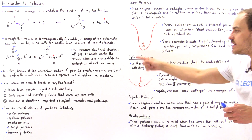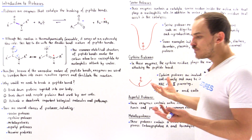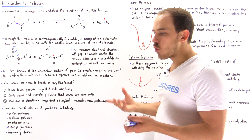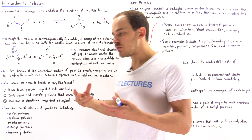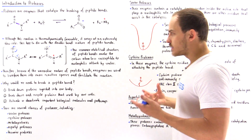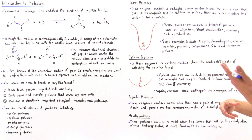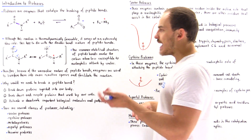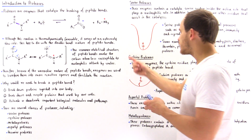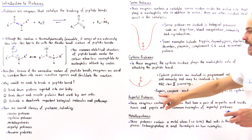Cysteine proteases are also found in many other organisms and are found predominantly in fruits. For example, the papaya fruit contains a special cysteine protease known as papain.